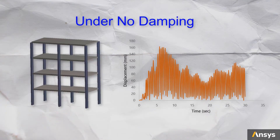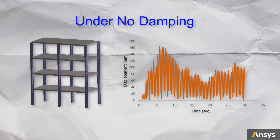First, let's study the response of the building to this earthquake without any damping. We perform a transient analysis since the inertial effects are crucial for this study and a time-dependent load profile is used for mimicking the earthquake. We can see the total displacement response of the structure, which experiences a maximum displacement of about 163 mm at the top. The structure vibrates without any reduction in displacement, which is a dangerous sign for a tall building.